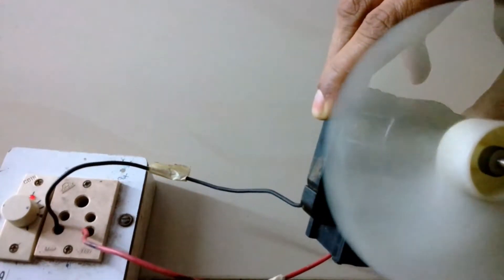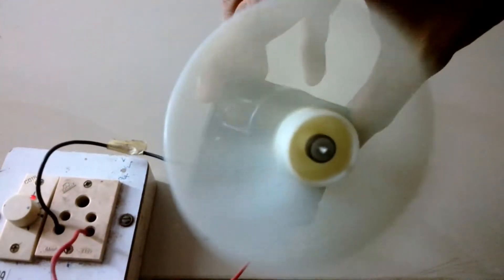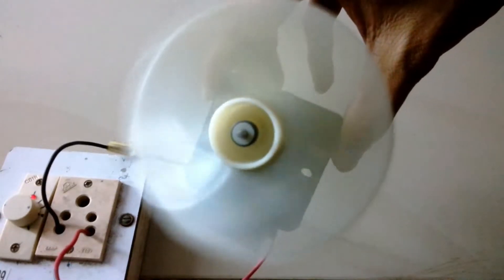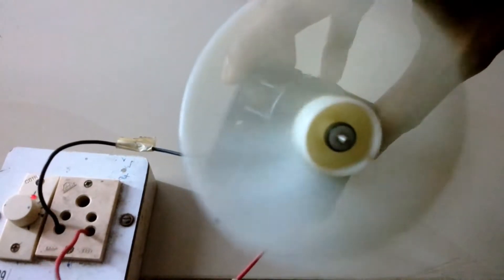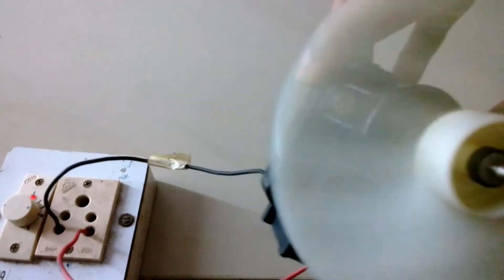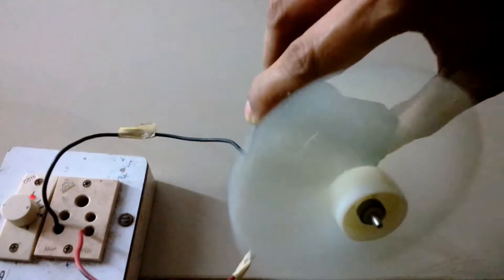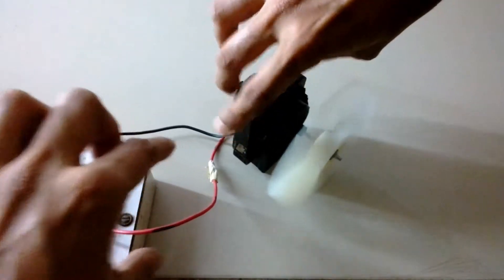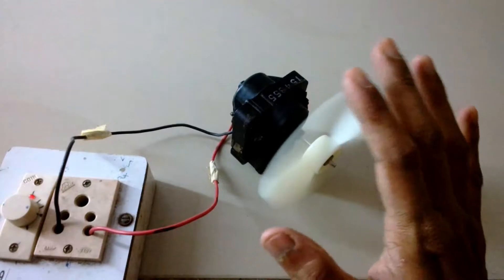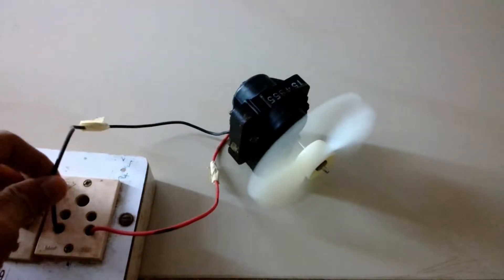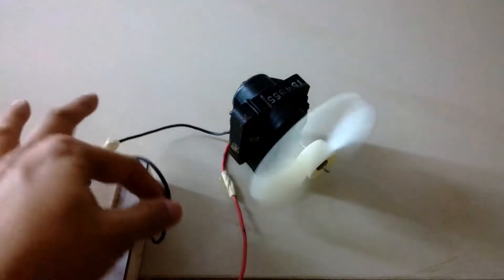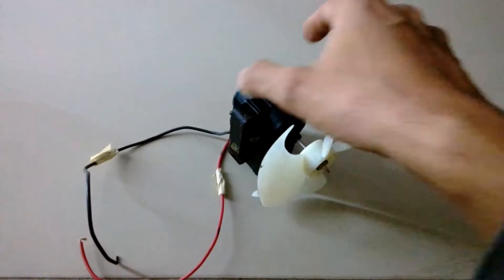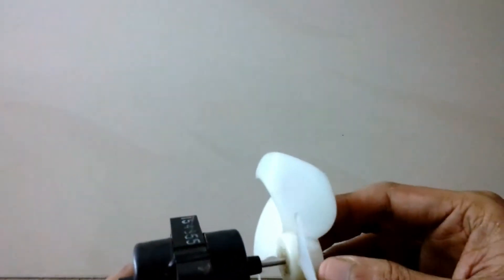You can hear the wind blowing into the microphone. Its RPM is 2800. In 50 Hertz frequency, that's about the highest RPM it can get, 2800 to 2900.